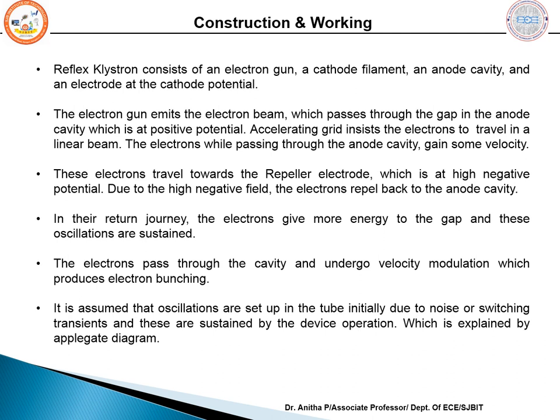The reflex klystron works as an oscillator with a single cavity. Like any vacuum tube, it consists of an electron gun to generate electrons, a cathode filament, an anode cavity maintained at positive potential where RF power output is obtained, and a repeller electrode maintained at a very high negative potential.